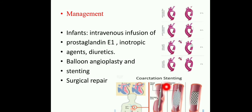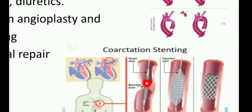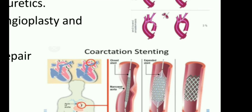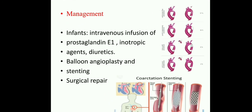They are also doing balloon angioplasty — coarctation of aorta stenting. A balloon catheter is inserted where the coarctation and narrowing is present. After inserting the catheter they inflate it, then remove the balloon part. A stent — a mesh — remains in that area, preventing repeated narrowing. This is called stenting. This is the surgical intervention of coarctation of aorta: balloon angioplasty, stenting, and surgical repair.